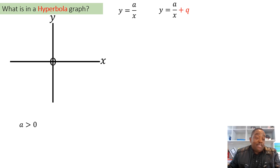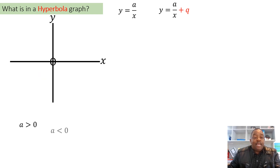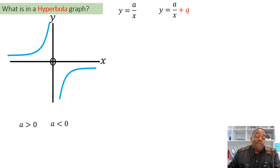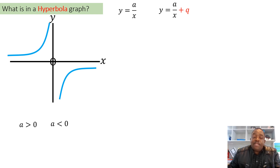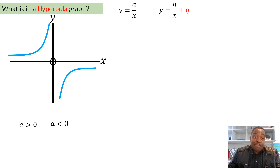The value of 'a' also tells you something about the graph. If 'a' is positive (a > 0), the curves sit in the first and third quadrants of the asymptotes. If 'a' is negative (a < 0), the curves sit in the second and fourth quadrants of the asymptotes. The quadrants are relative to the asymptotes, because when the graph shifts, the curves shift accordingly.